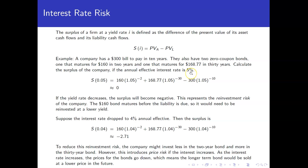So, at 5% annual effective interest rate, the surplus is going to be, take the $160, move it back two years. The $168.77, move it back 30 years. These two terms here give you the present value of the assets. Take the $300, move it back 10 years. That's your present value of your liabilities. Do that calculation, you get something close to zero.